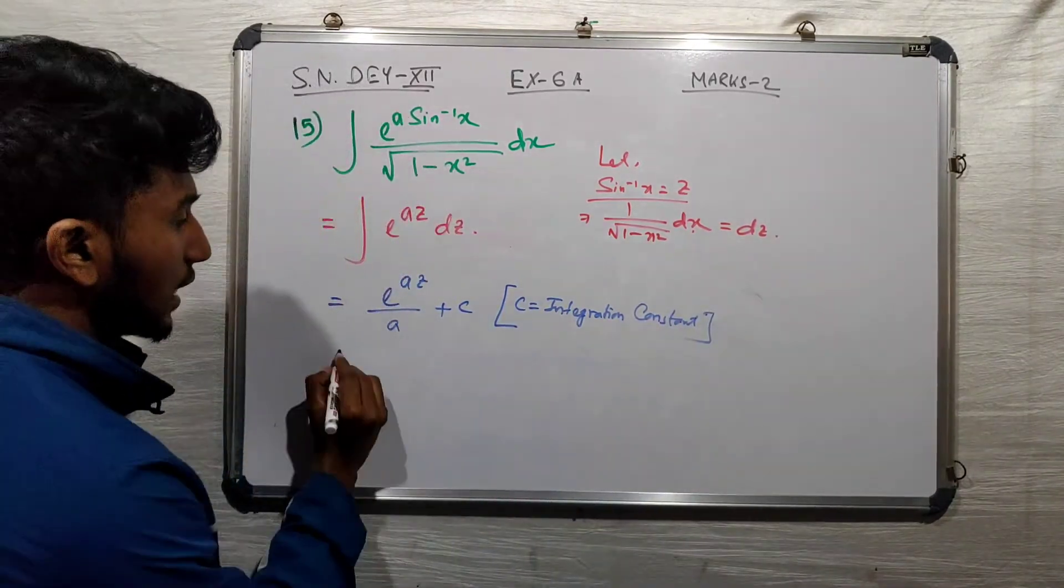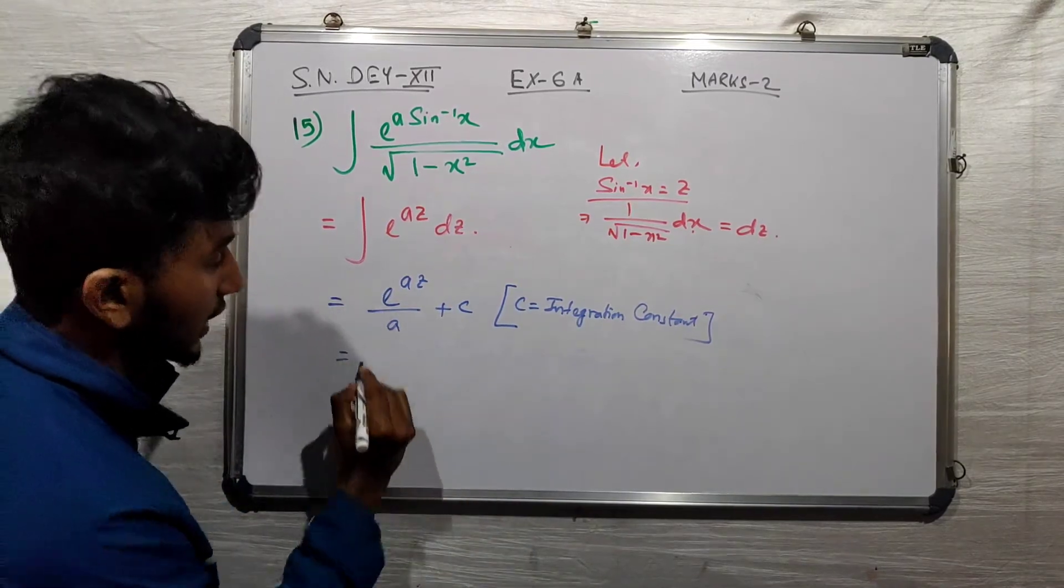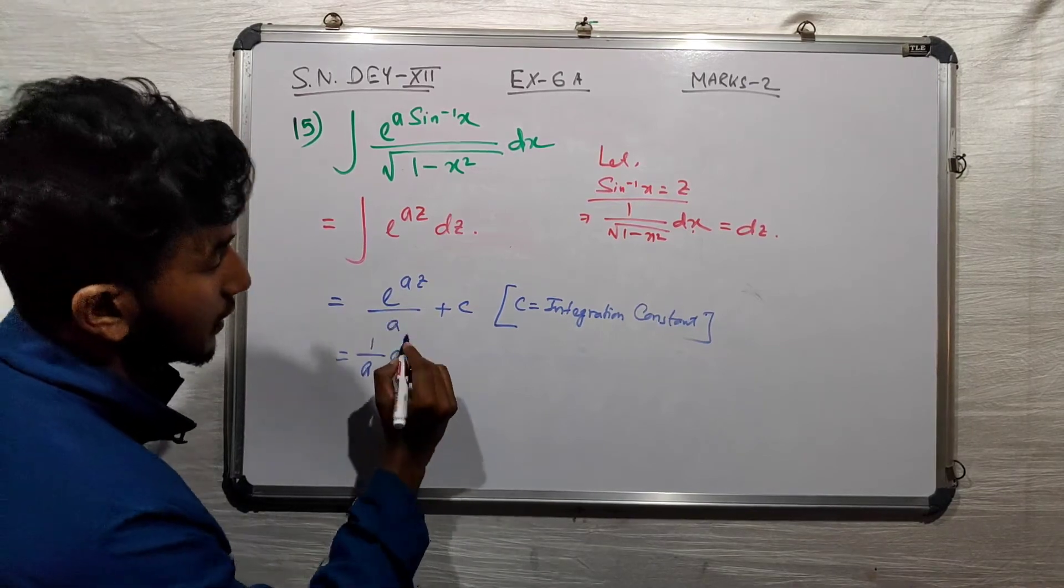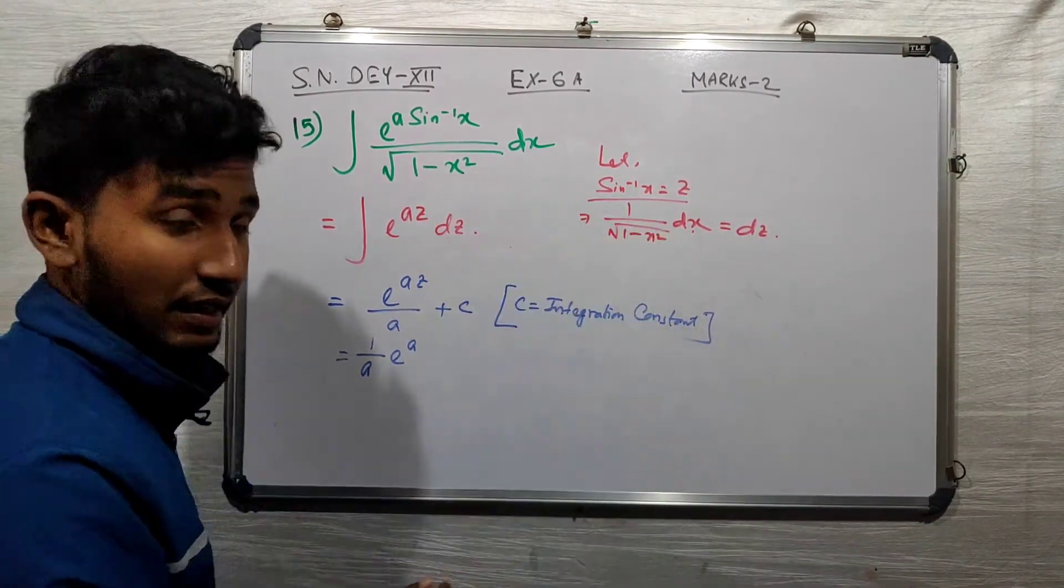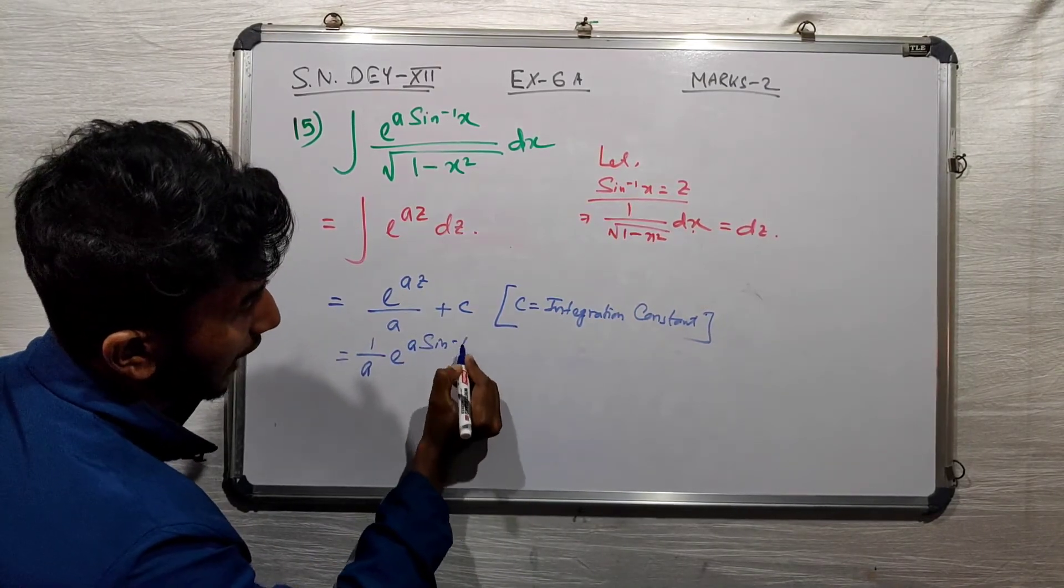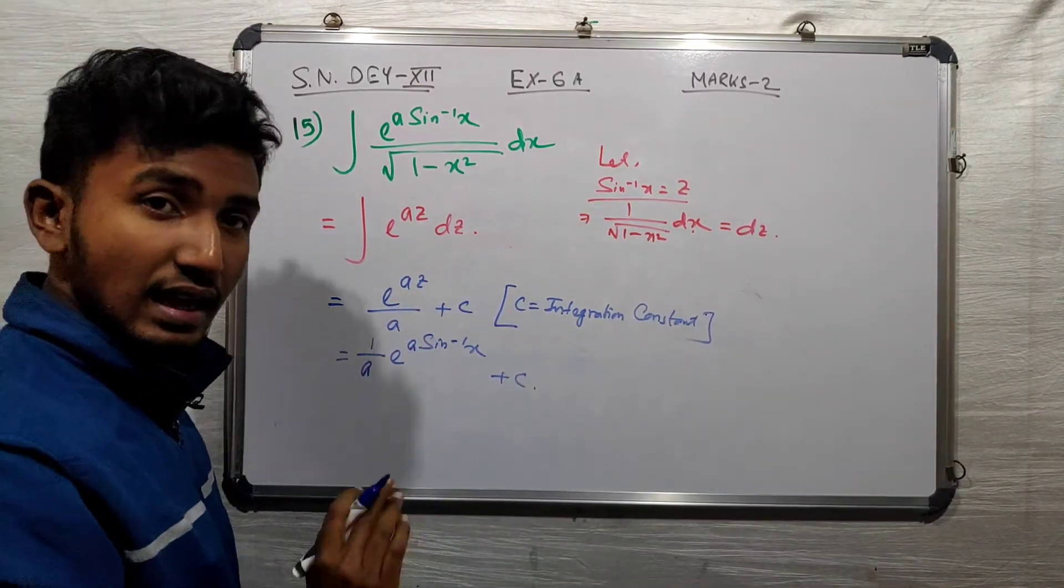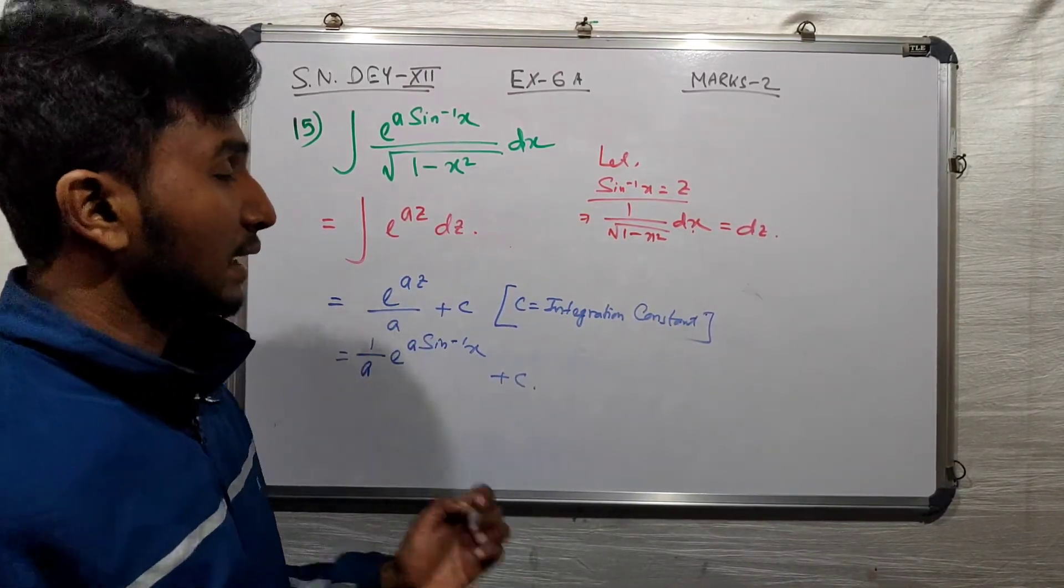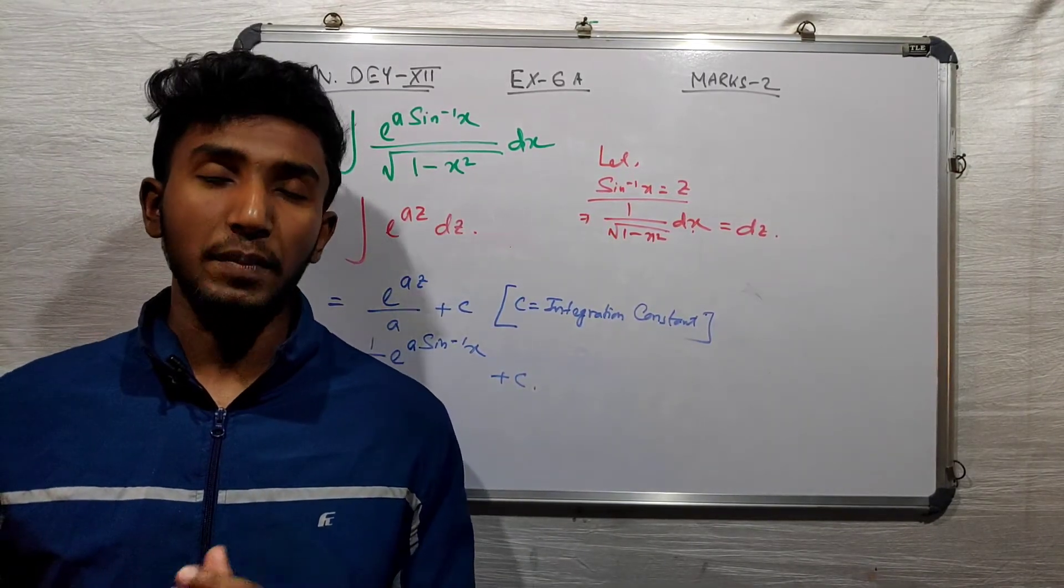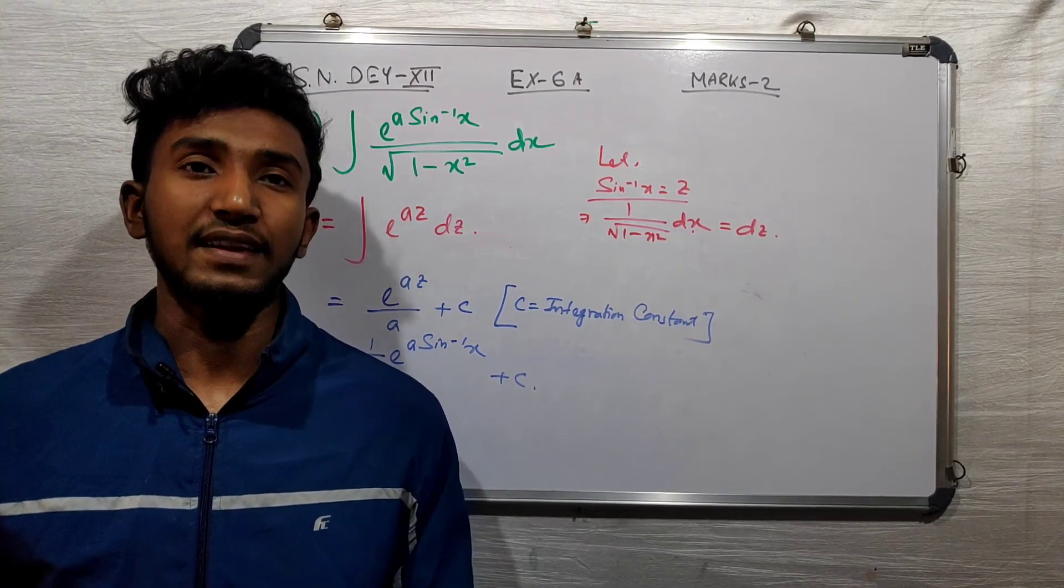Now we substitute back. z equals sine inverse x, so the final answer is 1 by a times e to the power a sine inverse x plus c. This is the answer to the given question.